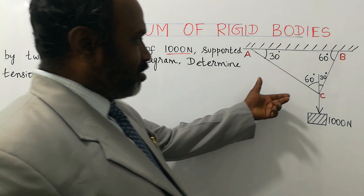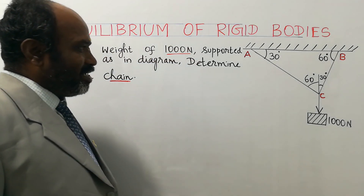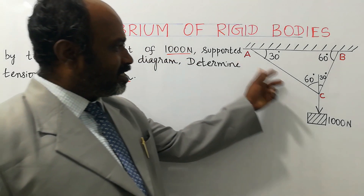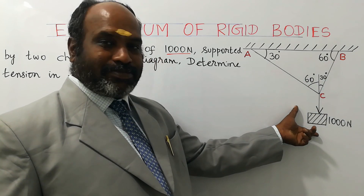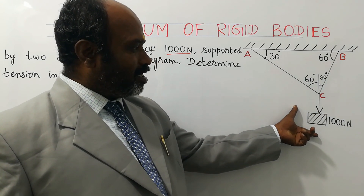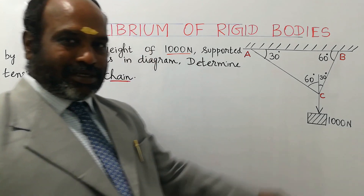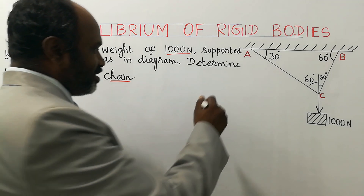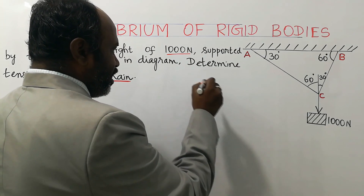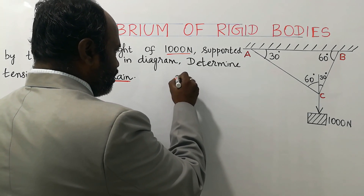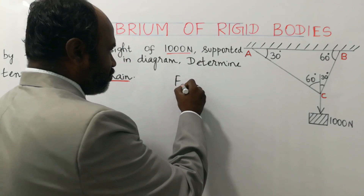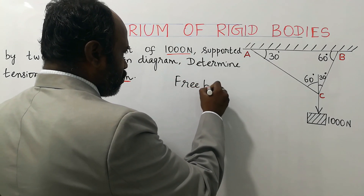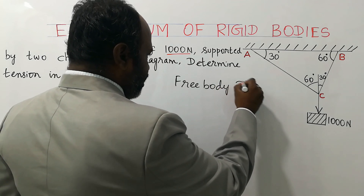This is the question diagram and we are asked to find the tension. The tension is in strings AC and BC, and this is the weight suspended, called 1000 Newton, acting downwards. For this diagram we are going to find the tension or the force in strings AC and BC. For questions of this type, a free body diagram is constructed.